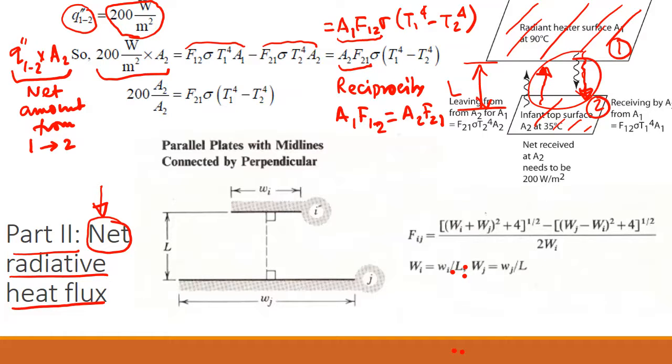Why did I suddenly do this step? I could have left it A1F12 and things will work just fine. But you notice on this side there is an A2. So if I write in terms of A2 here, that A2 cancels out, and we have a more compact expression.